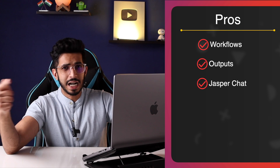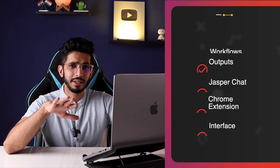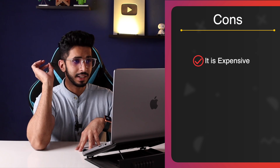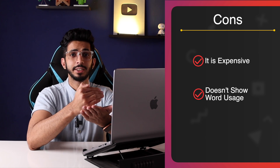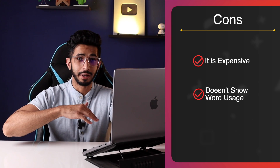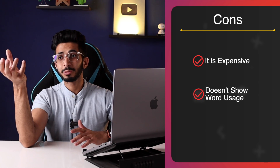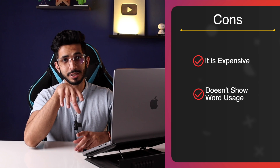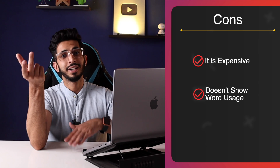Some pros: Jasper Chat is very similar to ChatGPT, the Chrome extension is one of the best among AI writers, the interface is clean, and outputs are generated quickly. For cons: it is expensive — Jasper is the most expensive AI writer I've tested. Also, it doesn't clearly show how many words you've consumed per query, which is a problem given the high price and word limits.